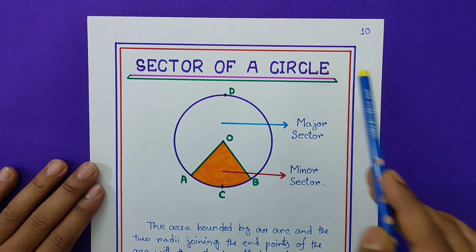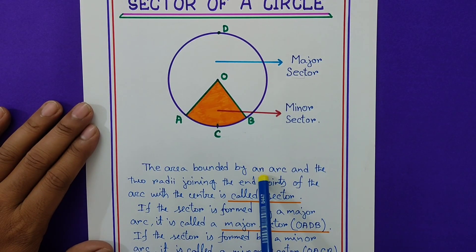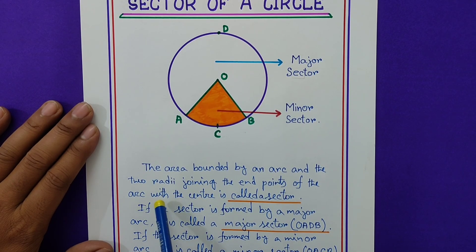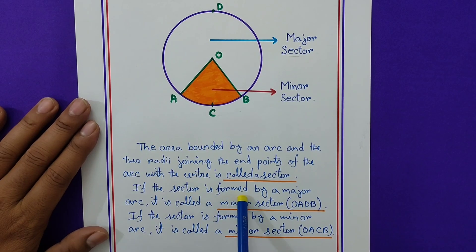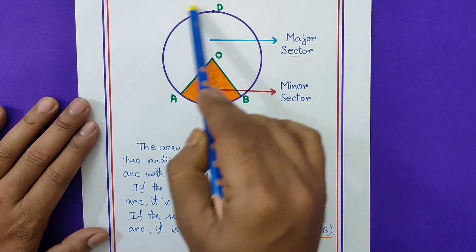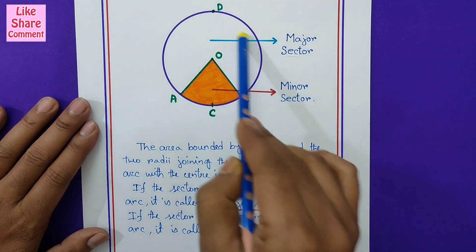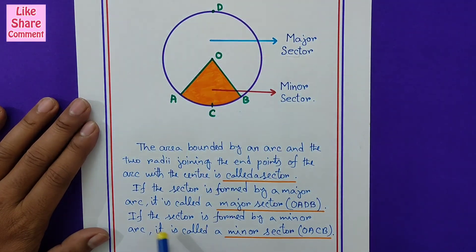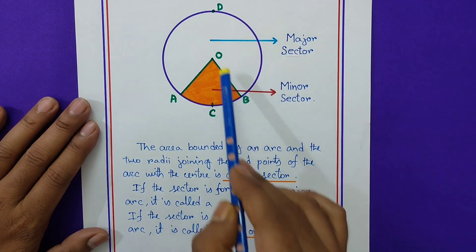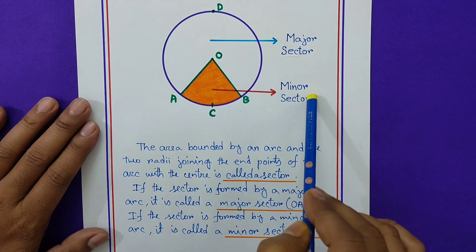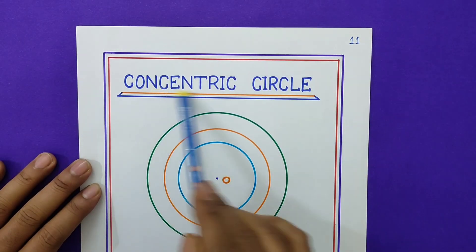Page number 10: sector of a circle. The area bounded by an arc and the two radii joining the endpoints of the arc with the center is called a sector. If the sector is formed by a major arc — ADB — it is called the major sector. If the sector is formed by a minor arc — ACB — it is called the minor sector. The colored part OACBO is called the minor sector.